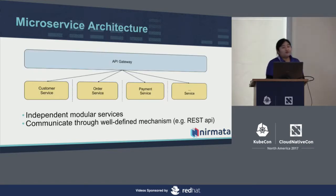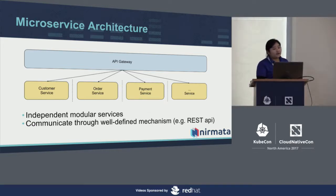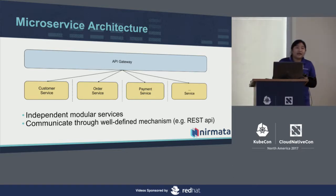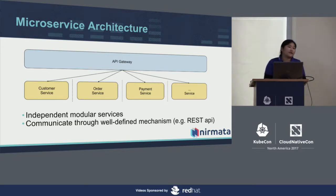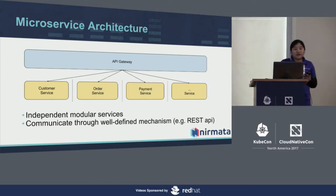What is microservice architecture? Basically, in microservice architecture, service modules work independently and in isolation. In most cases, we deploy those service modules on different containers in a Docker environment. The different service modules communicate with each other through, let's say, REST API.